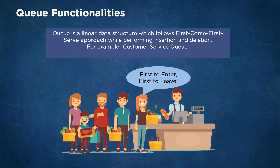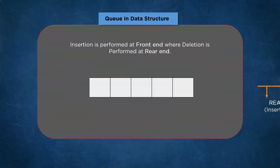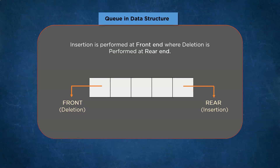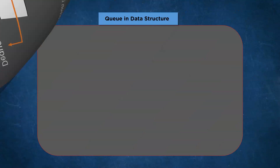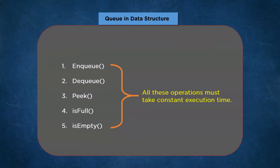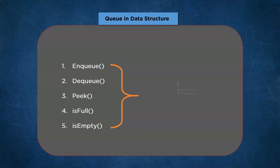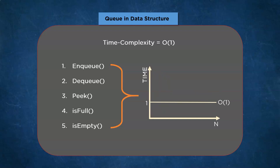Let's discuss some features of this queue data structure. Queue is a linear data structure that follows certain restrictions on insertion and deletion. Insertion can only be made from one end and deletion can only be performed from another end. Deletion is called dequeue and insertion is called enqueue. Along with these two primary operations, there exist three more supportive operations: peek, is-full, and is-empty. The peek operation returns the element at the front without removing it, and is-full and is-empty return the state of the queue. All these operations must take constant execution time — that is, O(1).